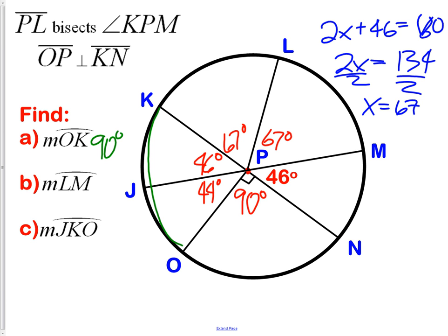Next is LM. LM is easy. We don't have to do any adding. We already know by looking that the measurement of the minor arc is equal to the central angle. So LM is equal to 67.